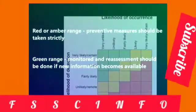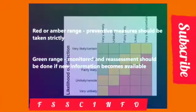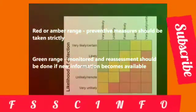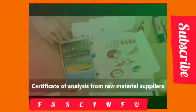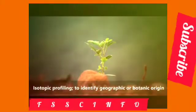Step two: design mitigation strategy and implement mitigation measures. If the raw material falls in the red or amber range, preventive measures should be taken strictly. For green range, materials must be monitored and reassessment done if new information is available. Assurance controls may include certificate of analysis from raw material suppliers, raw material testing — including positive release testing or periodic verification testing, ELISA and DNA testing, and isotopic profiling to identify geographic or botanic origin, as well as testing against legislative definitions.